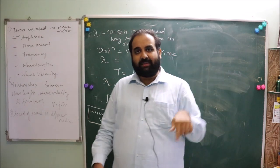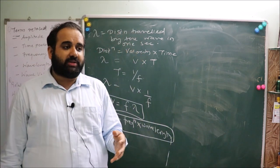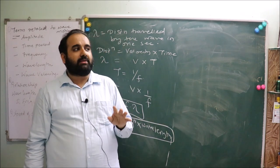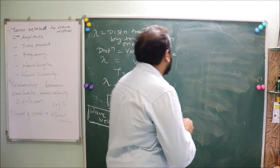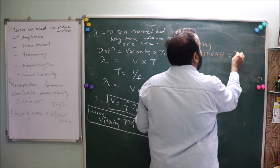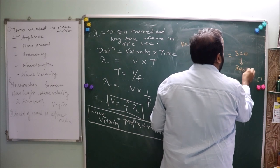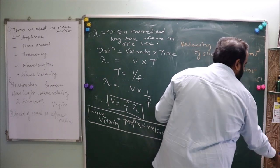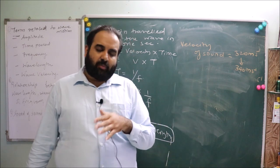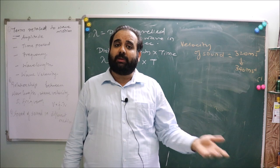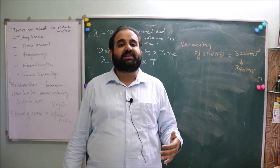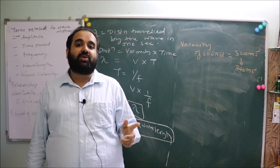Our textbook has a table of sound velocities in different media — solids, liquids, and gases. We don't need to memorize all those values, but the velocity of sound in air is approximately 320 to 340 meters per second. This value will generally be provided in numerical problems. If you have any comments or queries, please put them in the comment section and do subscribe to the channel. Thank you.